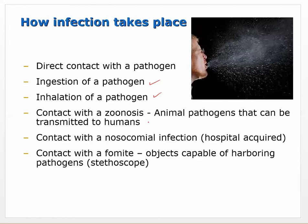Inhalation is another route - that provides quick access to the blood supply. Zoonosis refers to animal pathogens that can be transmitted to humans. There aren't very many, but some examples include bird flu.